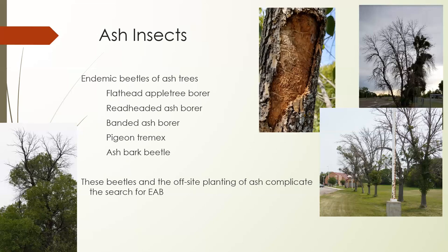Whenever you find EAB, you never find tree one — it's usually been there four or five years by the time it's found. All these other pests bother ash trees that are stressed. EAB doesn't care if an ash tree is stressed or not — it'll go kill it if it can find it, once the population gets high enough. That's the key difference.